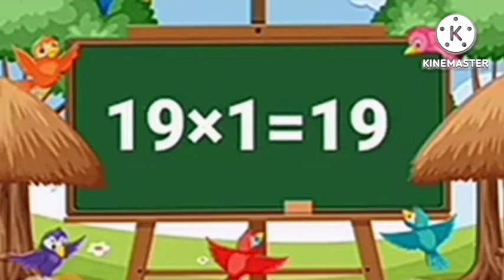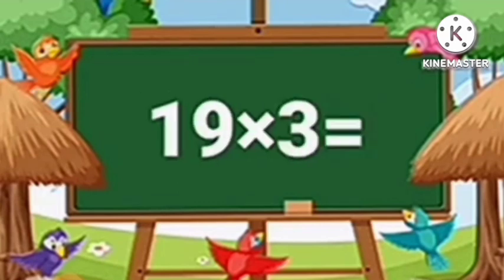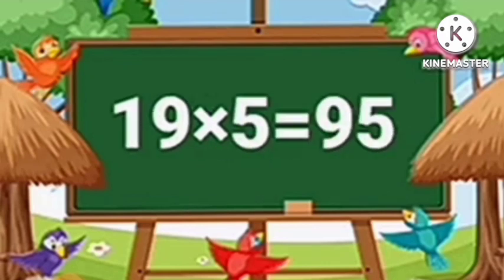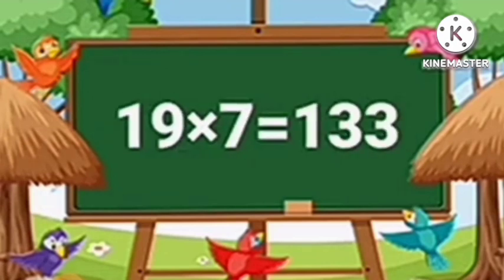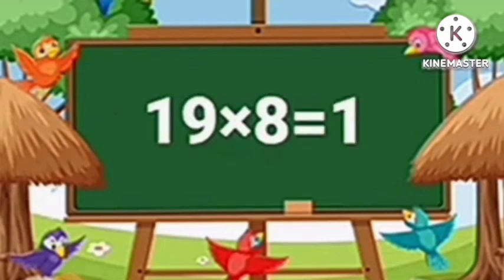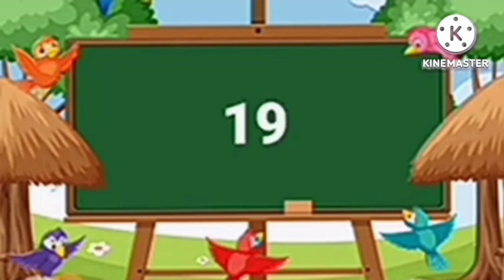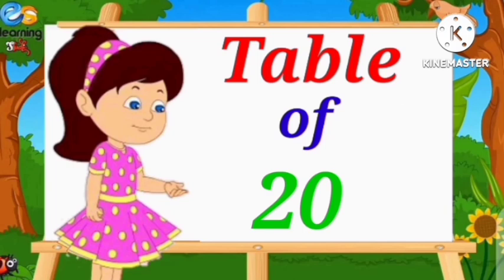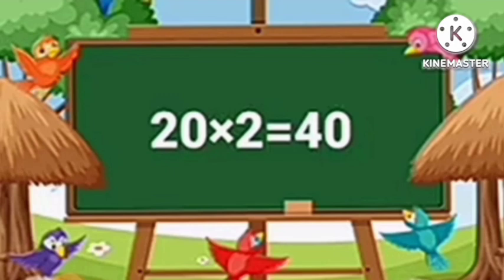Table of Nineteen. Nineteen ones are nineteen. Nineteen twos are thirty-eight. Nineteen threes are fifty-seven. Nineteen fours are seventy-six. Nineteen fives are ninety-five. Nineteen sixes are one hundred fourteen. Nineteen sevens are one hundred thirty-three. Nineteen eights are one hundred fifty-two. Nineteen nines are one hundred seventy-one. Nineteen tens are one hundred ninety.